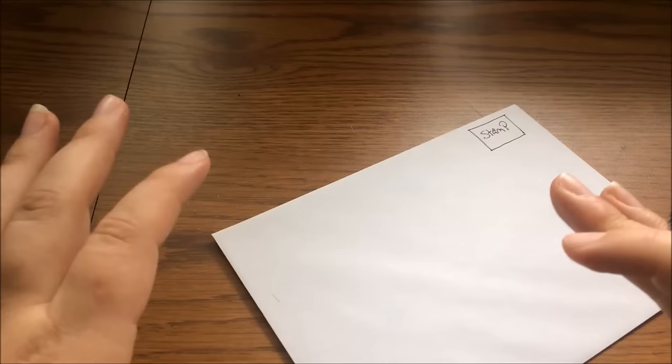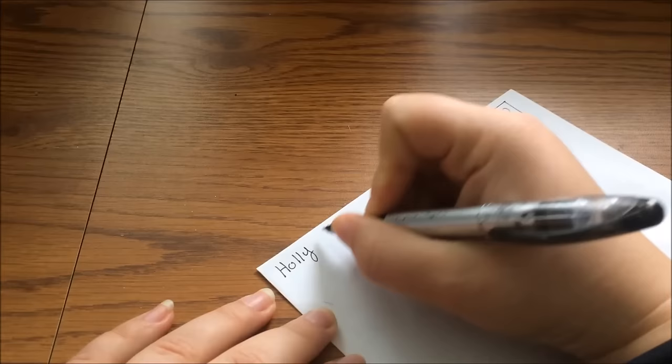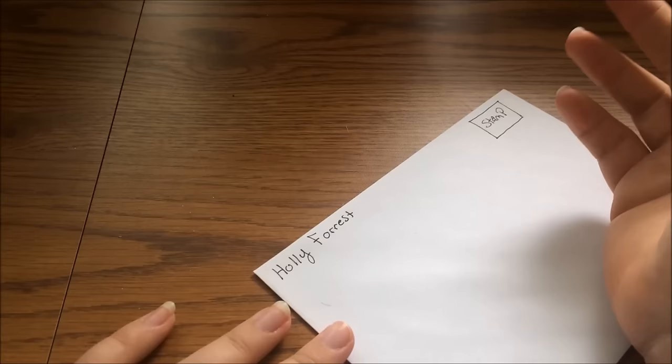Since Holly Forest is the one that's going to be sending out the envelope, if you're watching this and learning how to address an envelope, you're probably going to be the one sending it out. So you want to make sure you put your address in the top left hand corner. We're going to start out by writing your name first. So hers is Holly Forest. And you definitely want to make sure that you're using very legible print. You don't want to use cursive. Make sure it's readable.